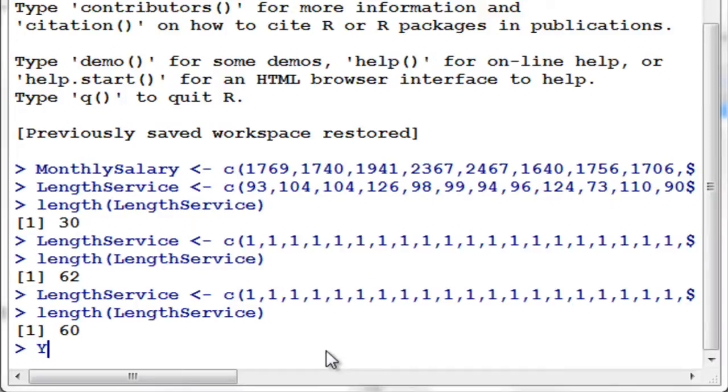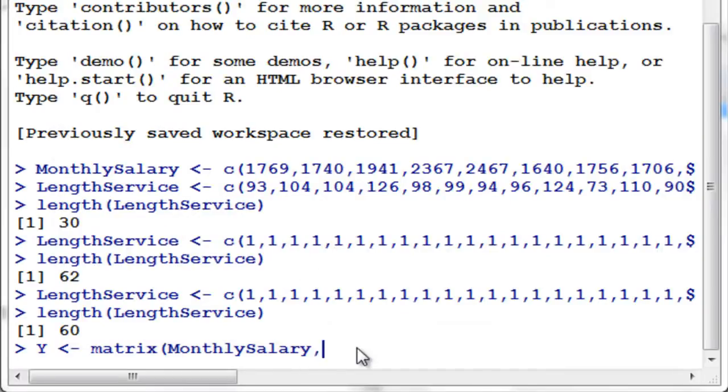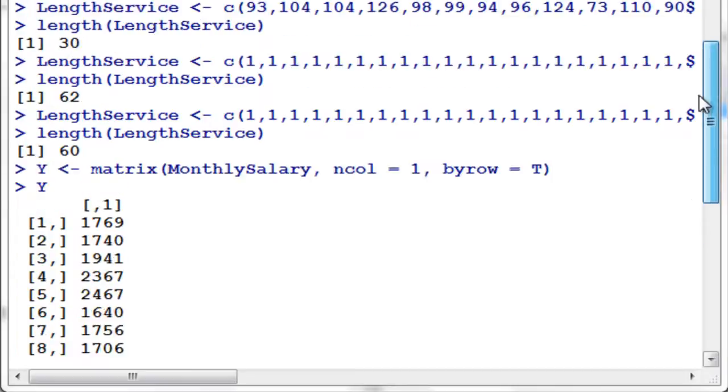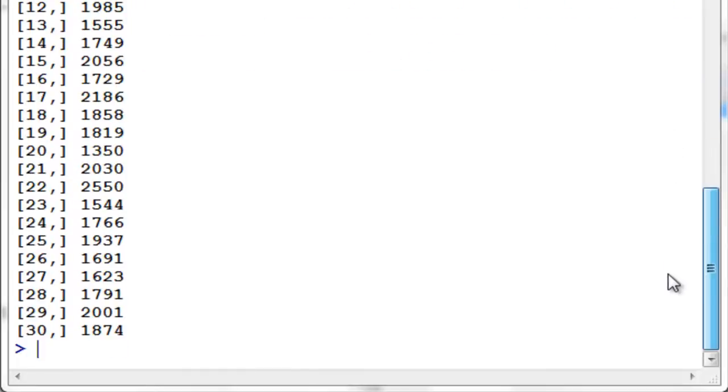Now we're going to make matrix. Let's make it a matrix. So first of all Y, it should be a matrix. And this is the monthly salary. And comma. Since it is N by one, so it's N call and that's one only. And by row should be true. So that's right. So that's how you input your data since this is our matrix which is N by one. So we have 30 by one.